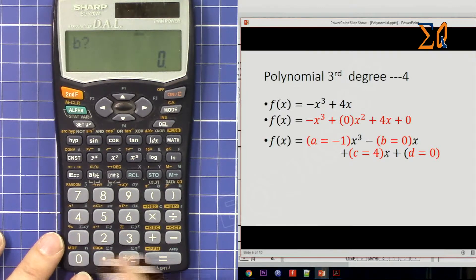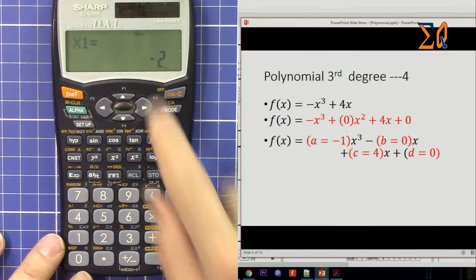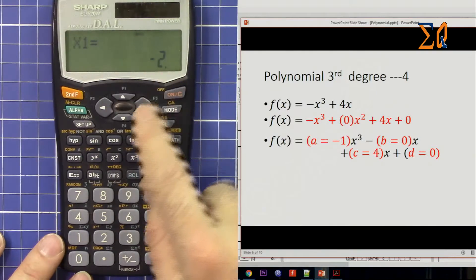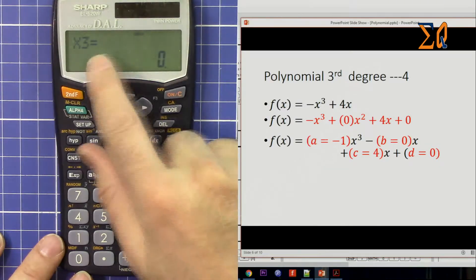So we got answer: x1 is -2, x2 is -2, and then x3 is 0.